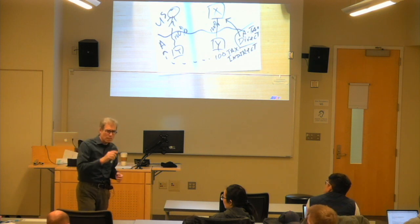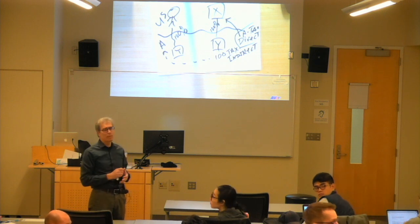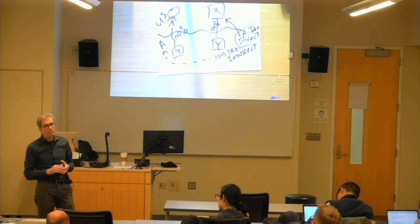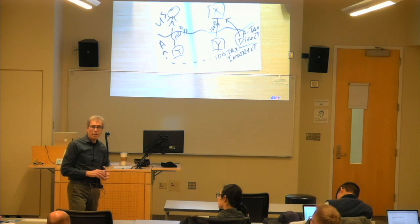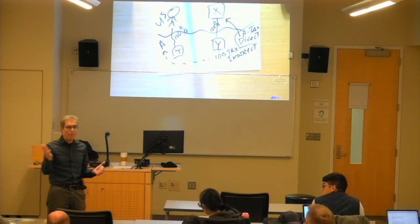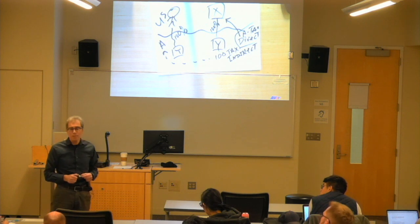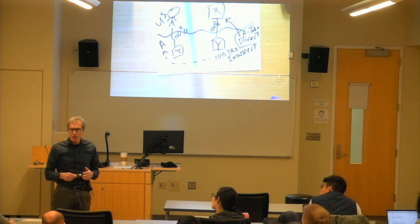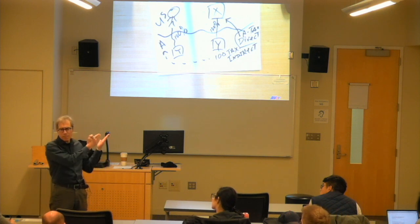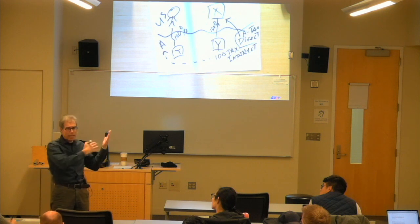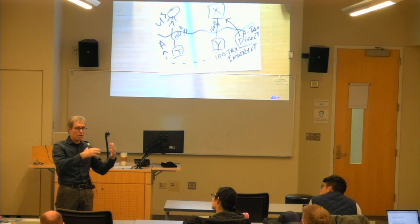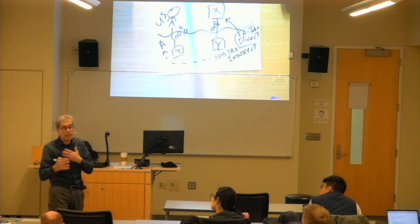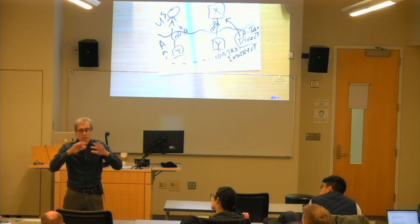Ignoring tax rates and credits, economically there's no difference — whether the tax is direct, where the US person is the legal taxpayer, or where Y is the taxpayer. There's no economic difference. And this gets back to something said last week: all of this with boxes, and certain activities being within one legal entity versus another — all of these boxes are fictions.